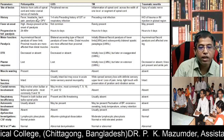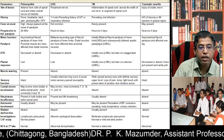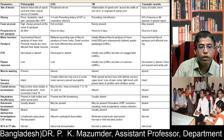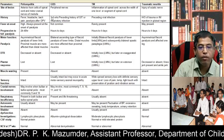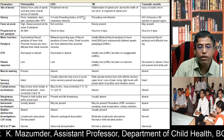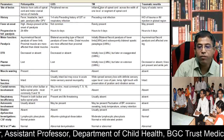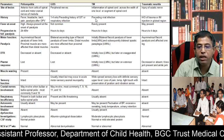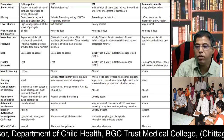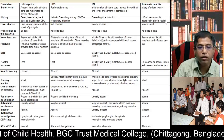Regarding history: in poliomyelitis there is fever, headache, back pain, and paralysis after oral polio vaccine — this is the more common history. In Guillain-Barré syndrome there is a 1 to 4 weeks preceding history of GI or respiratory infection. In transverse myelitis there is a preceding viral infection. In traumatic neuritis there is a history of trauma or IM injection in the gluteal region.